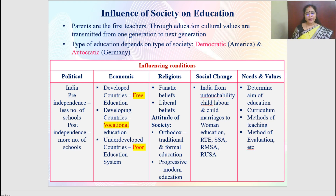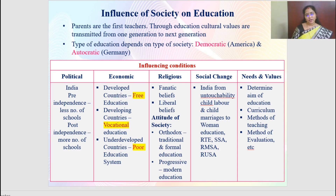Let us focus on the influence of society on education. Family is the fundamental unit of society and every human being is a building block of society. Parents are the first teachers, so from the family, cultural values start going from one generation to the other. Family, school and society serve as a platform for transmitting culture across generations. The type of education depends upon the type of society — an autocratic society provides autocratic education, and a democratic society provides democratic education.